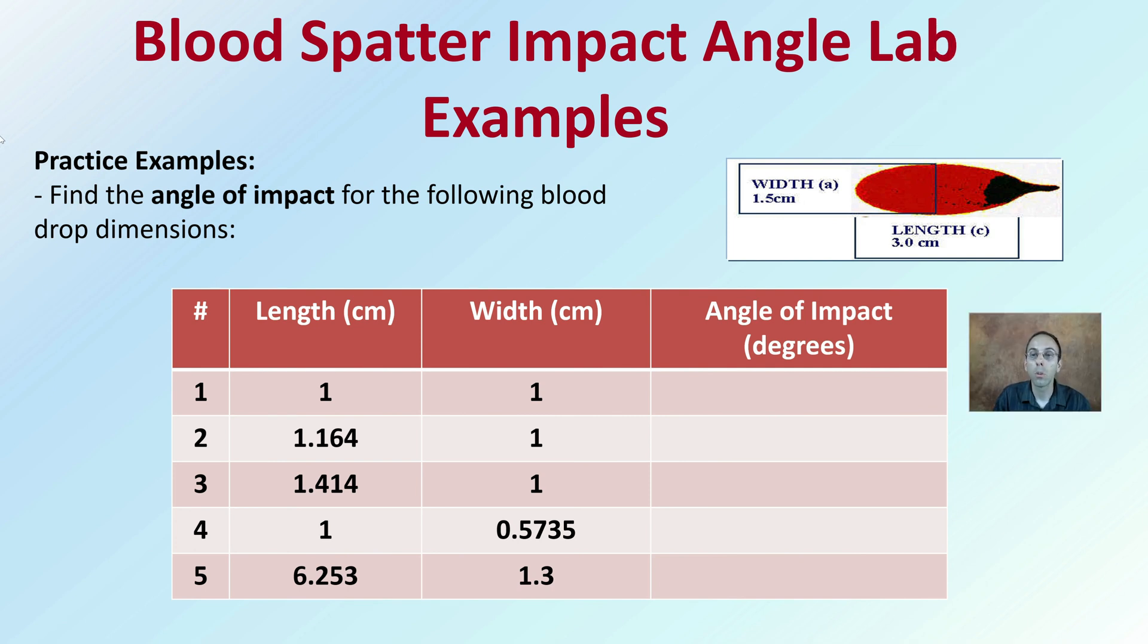With that information, can you go through some practice examples? I gave you one, but now I'm giving you a data set. I give you five different blood splatters. I want you to find the angle of impact following the blood droplet dimensions. I give you the length, the width. I want you to determine the angle of impact measured in degrees. This will be a great time to pause the video because my next slide is going to provide you with the answers to allow you to check your work. Pause the video now.